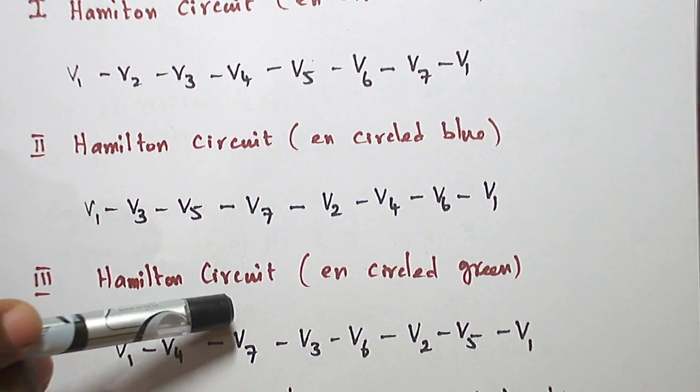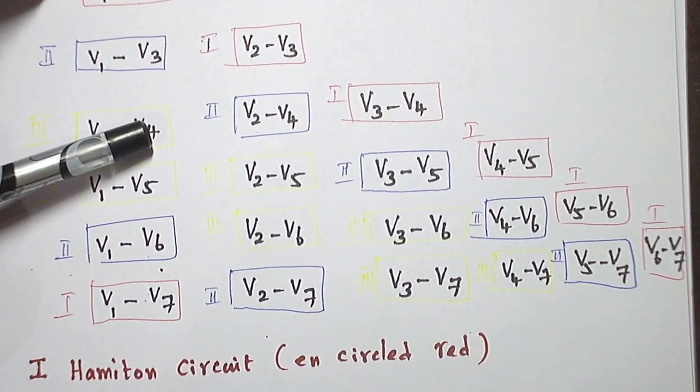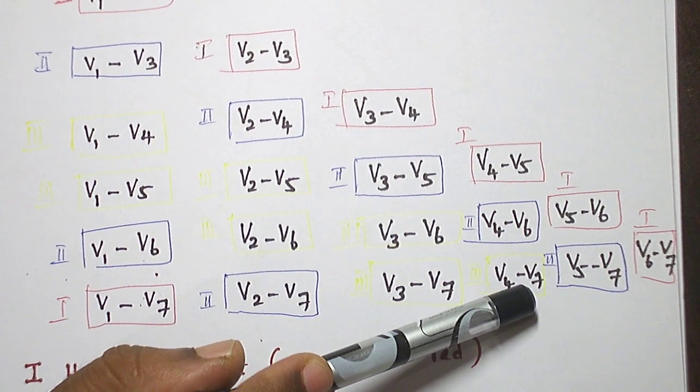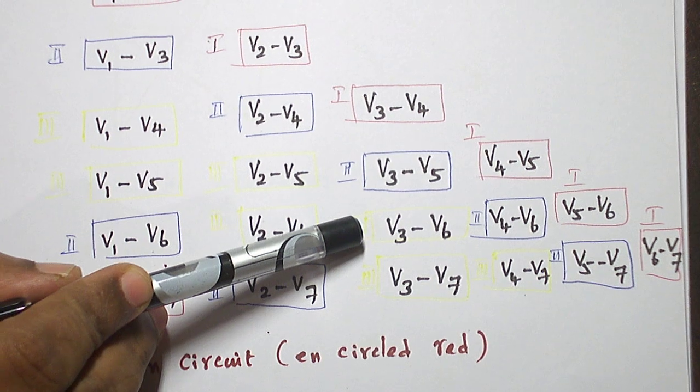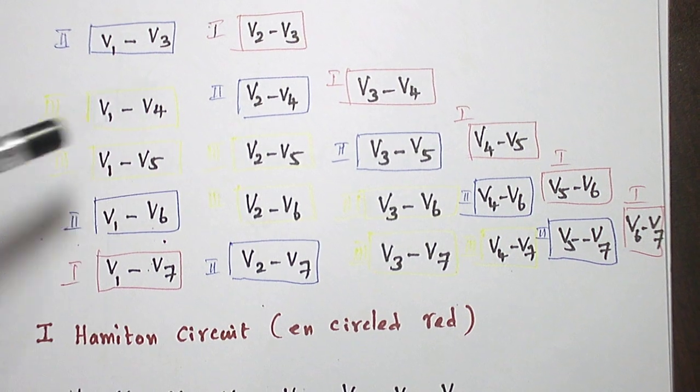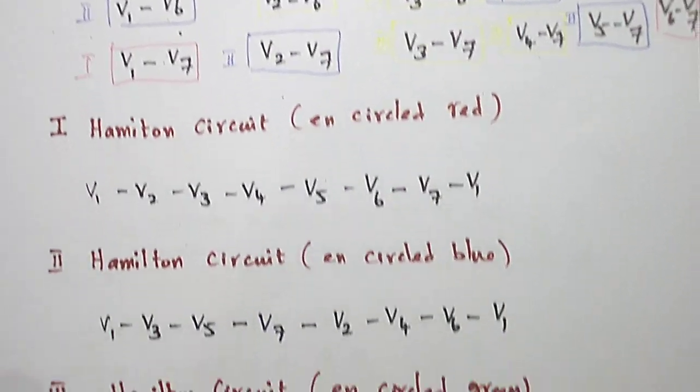Then, for another Hamilton circuit that are encircled in green: V1 to V4, then V4 to V7, then V7 to V3, then V3 to V6, then V6 to V2, then V2 to V5, and finally V5 to V1. This is the Hamilton circuit.